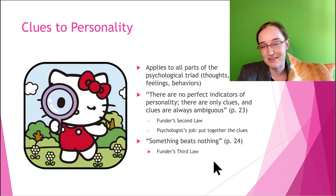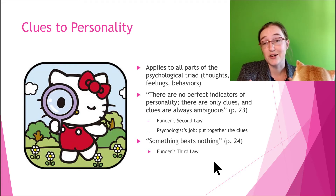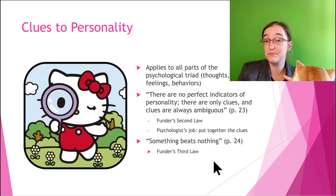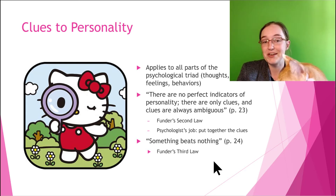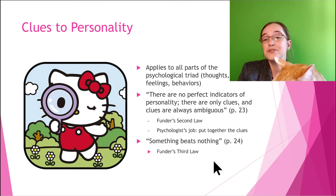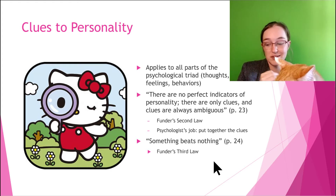So we're going to talk about the clues of personality. These apply to all parts of the triad I talked about in the last module. We have to look at all the parts — thoughts, feelings, and behaviors — because personality is complicated. There's no perfect indicator of personality. There are only clues, and the clues we get are ambiguous. These clues are really any observable aspect of personality, because we can't directly observe personality.